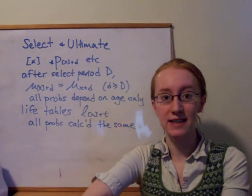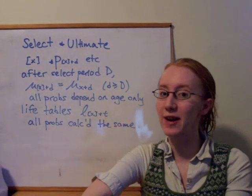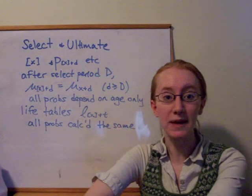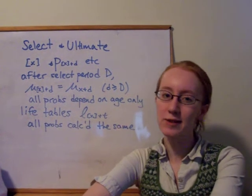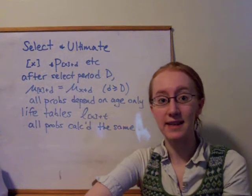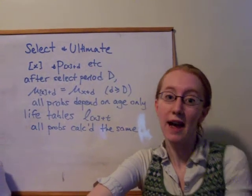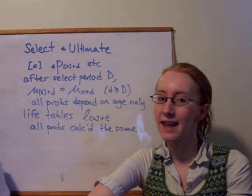So this effect is known as the selection effect, or sometimes the temporary selection effect, because it does tend to wear off after time. So we want a way to model that. And to do that, we introduce the notation of x in square brackets, and that indicates a life selected at age x. So they bought their policy at age x, they were healthier than the average x-year-old at that time.